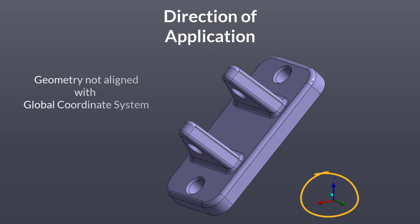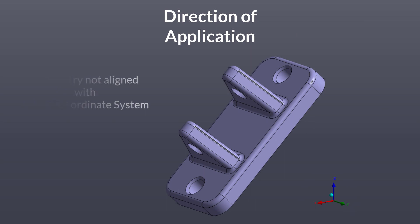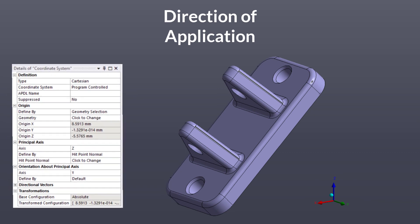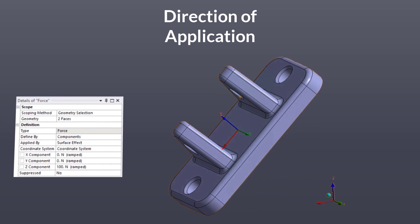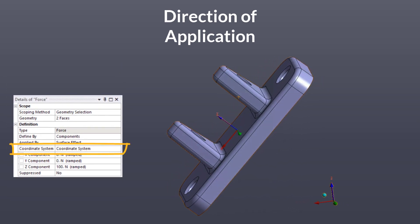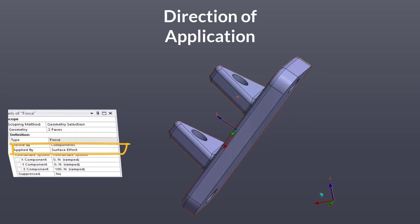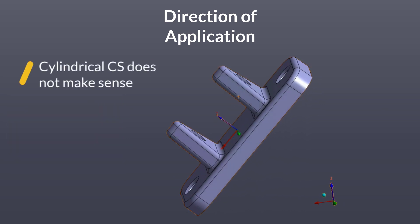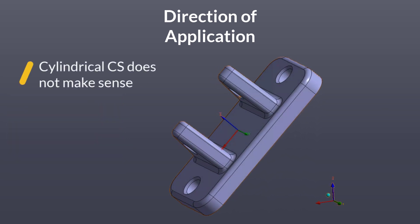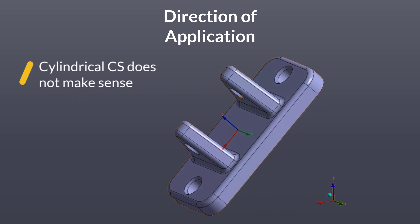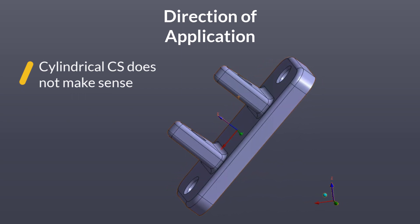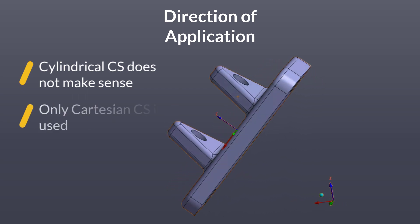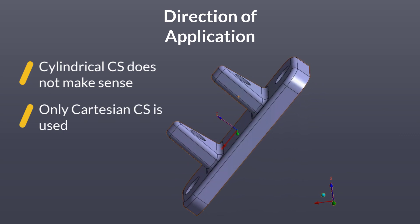In many cases, the geometry may not be aligned with the global coordinate system. In such cases, we can create a local coordinate system and then define the loading direction based on the local coordinate system components. When creating the local coordinate system, a cylindrical coordinate system does not make sense in the context of loads since we don't want to apply load per radian. So we can only use a local Cartesian coordinate system.